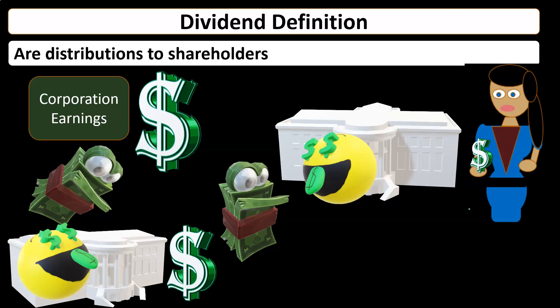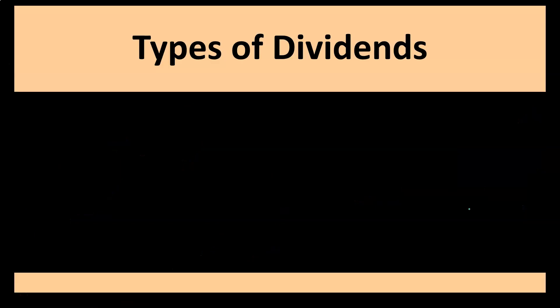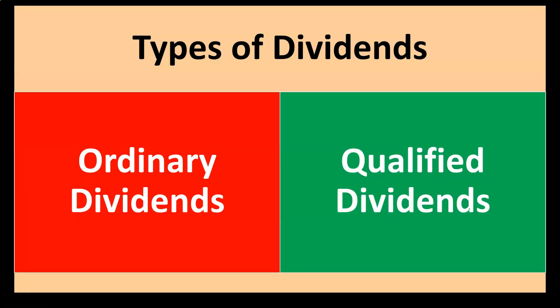With double taxation in mind, there are two tiers of dividends: ordinary dividends and qualified dividends. The qualified dividends concept is the government trying to put in an incentive basically for US companies — for us to invest in them. They're saying: if you support US companies, we'll give you a benefit on the dividends because we recognize there's double taxation involved, the tax being applied both to the corporate side and when they distribute to the individual.